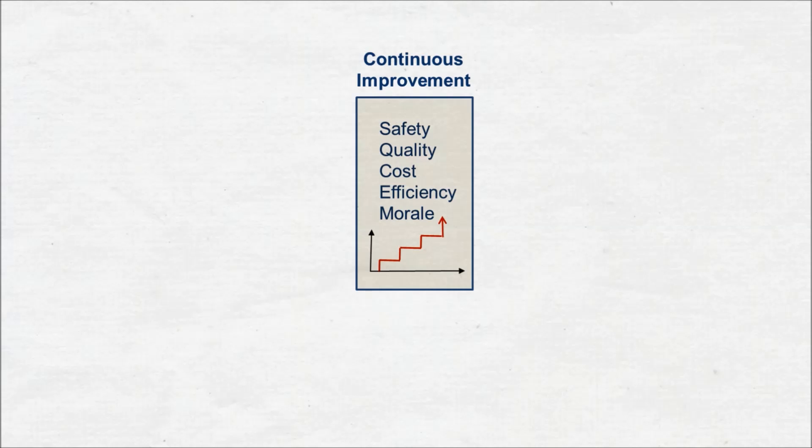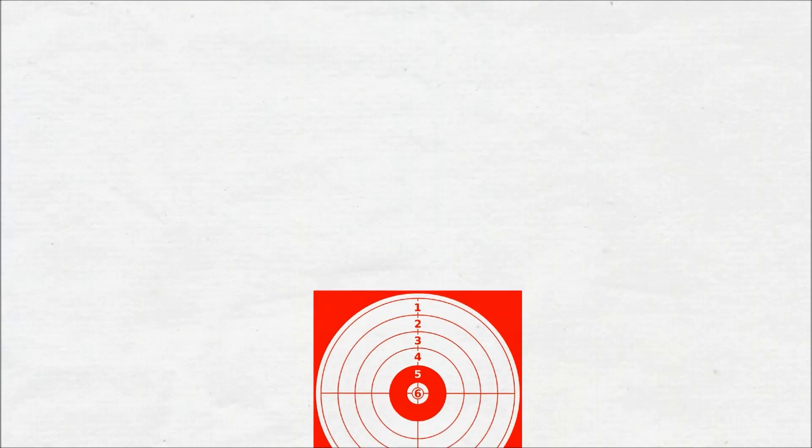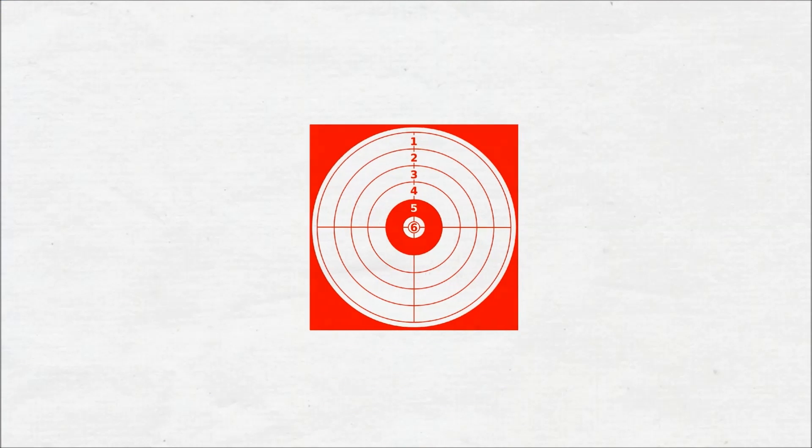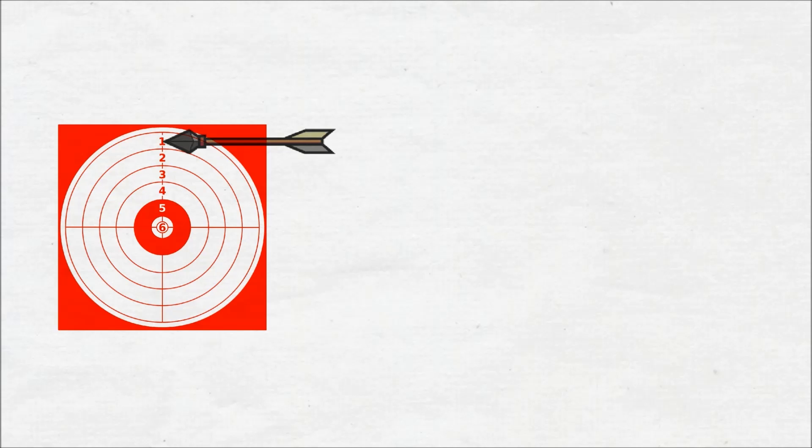Of course, as the name implies, this process is never-ending. The way this works is that we set a results target and establish a process to achieve it. We problem solve and work at it until the process is effective in achieving our target. Then we fine-tune the process until we get consistent and sustainable results.